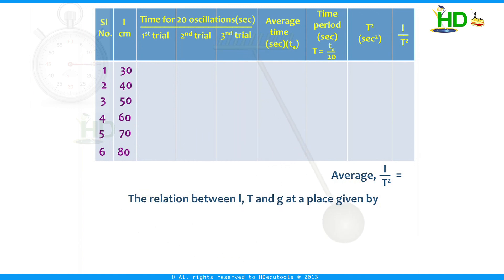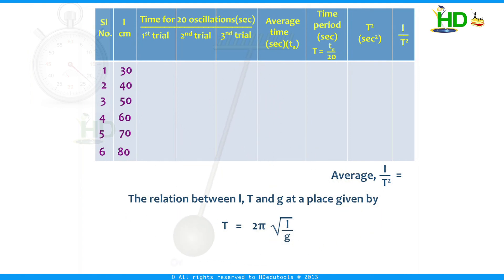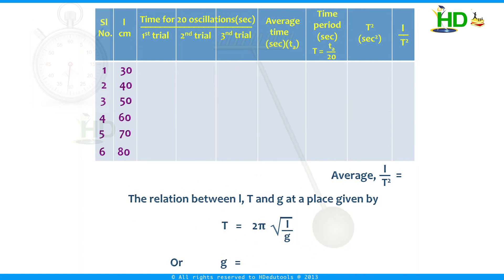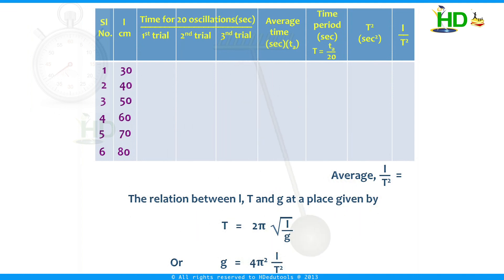The relation between L, T, and g at a place is given by T = 2π√(L/g), which is the time period of the simple pendulum. From this, we can calculate the value of g: g = 4π²L/T². Substituting the average value of L/T² obtained from the table, we can calculate the value of g at a given place.